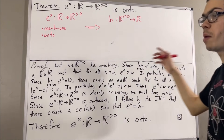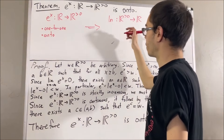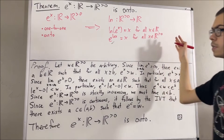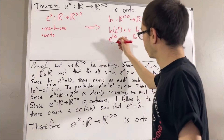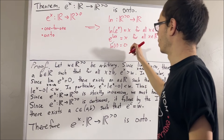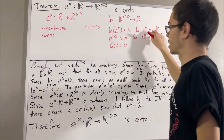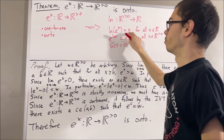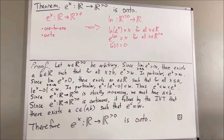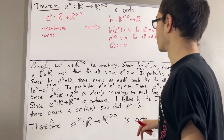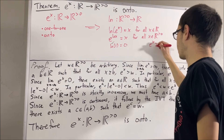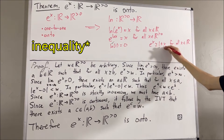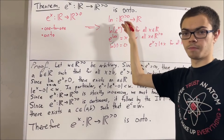From properties of inverses of functions, we have the following. In particular, the natural log of 1 equals 0. To see this, take x to be 0: we have ln(1) = ln(e^0) = 0.